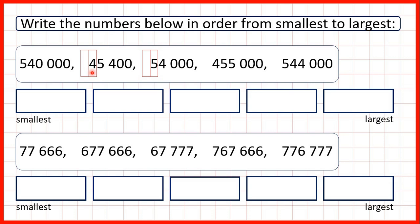Now if we look at the ten thousands place value, here we have four ten thousands, and here we have five. So this number here is our smallest number, and then this number is next smallest, because these are our five-digit numbers, and all of our other numbers have six digits.